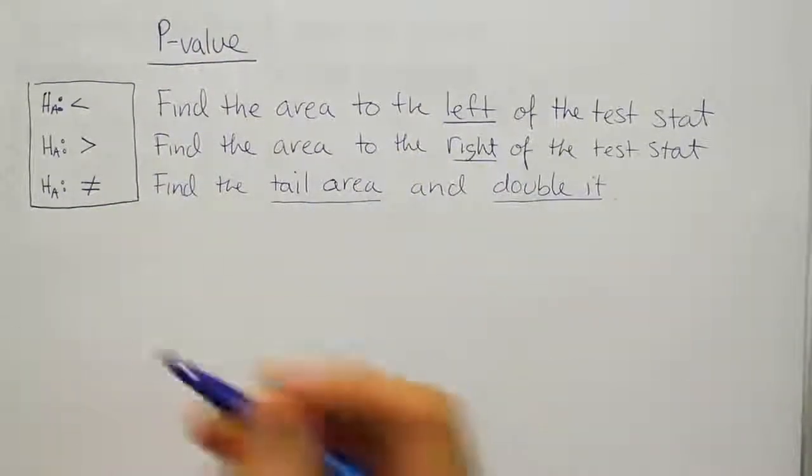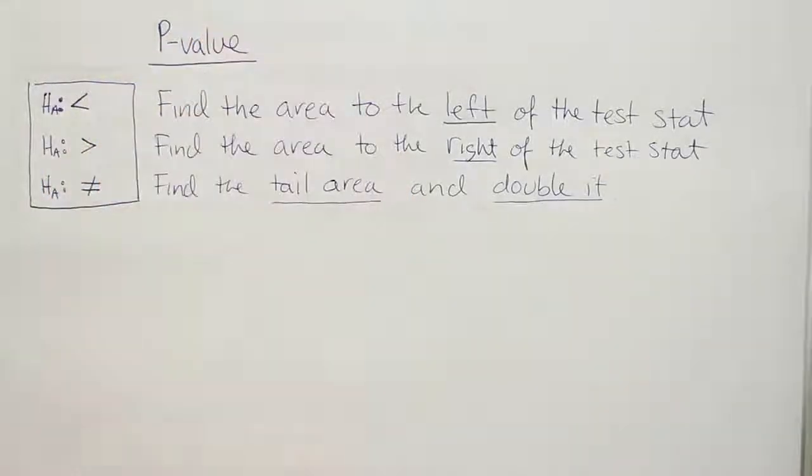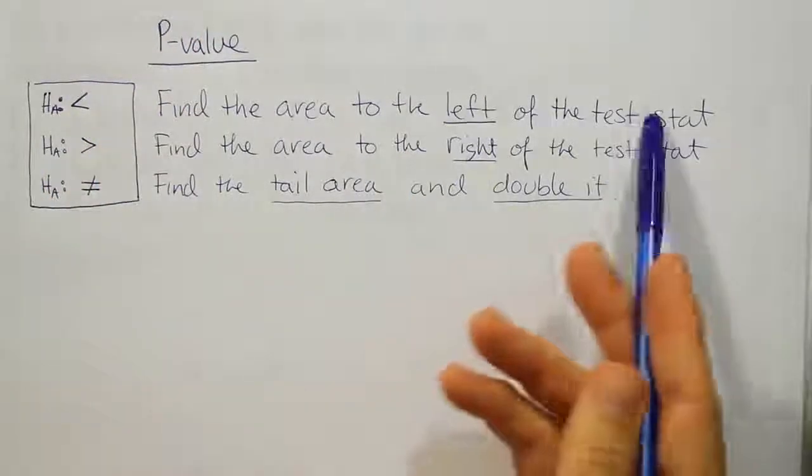So whenever HA had this less than symbol, we would find the area to the left of the test stat.